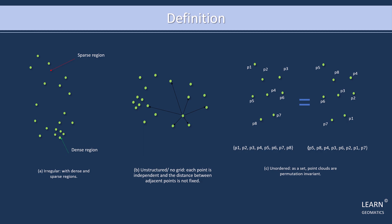Secondly, they are unstructured and have no grid, meaning that each point is independent and the distance between adjacent points is not fixed. For example, if you were to scan a rock, the point cloud would be irregularly spaced with no set pattern or grid.